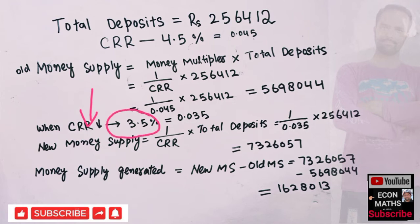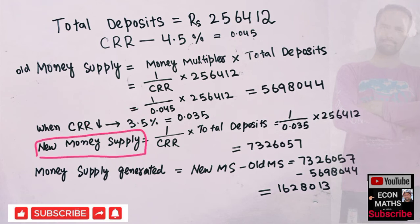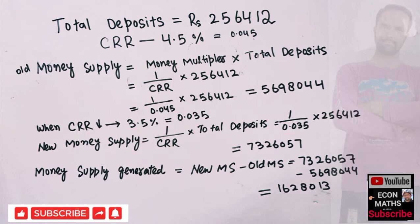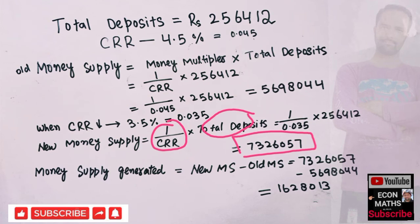Now, RBI has reduced the CRR to 3.5 percent, which can be written as 0.035. The new money supply will be equal to the money multiplier times the total deposits. The money multiplier is simply 1 upon CRR, that means 1 upon 0.035, times the total deposits. When we multiply this money multiplier with total deposits, we get a figure of 73 lakh 26,057. This is the new money supply when CRR is 3.5 percent.